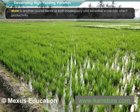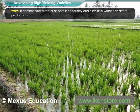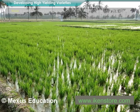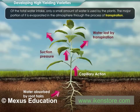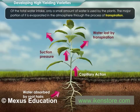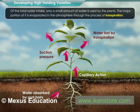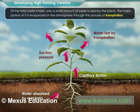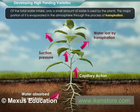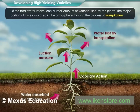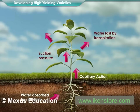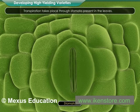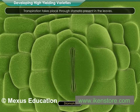Water is another crucial factor, as both inadequacy and excessive water can affect productivity. Of the total water intake, only a small amount is used by the plants. The major portion is evaporated into the atmosphere through the process of transpiration, which takes place through stomata present in the leaves.